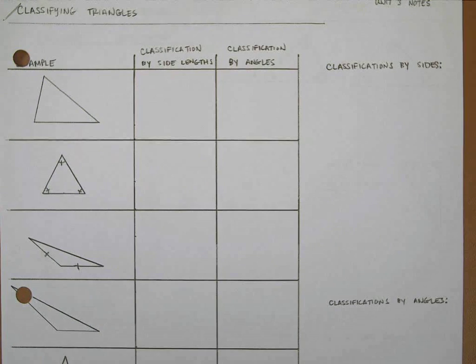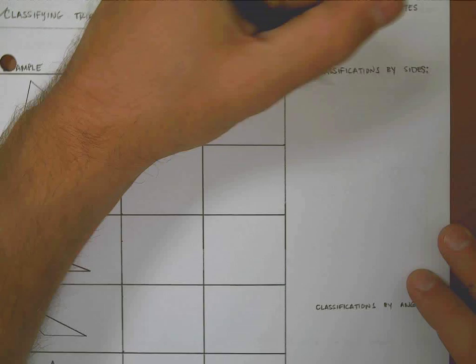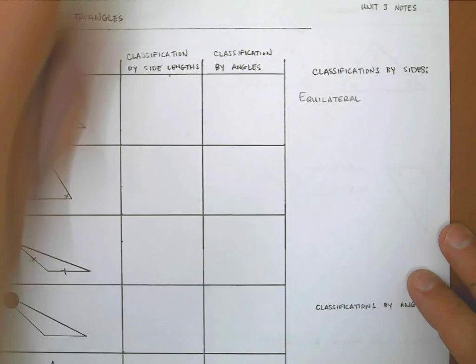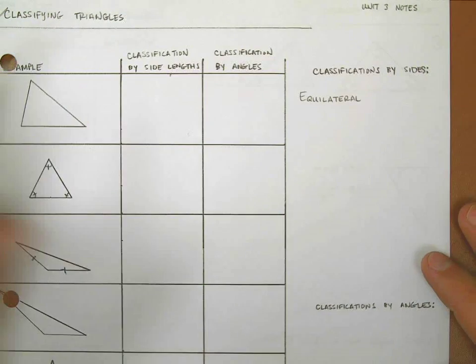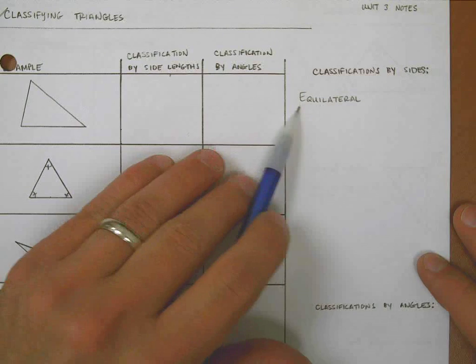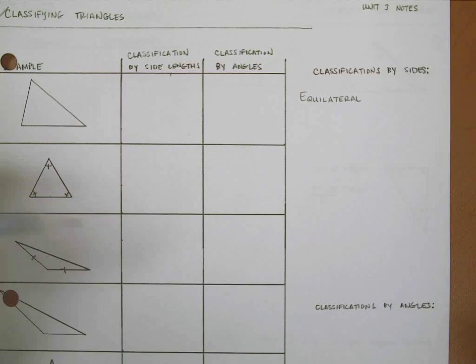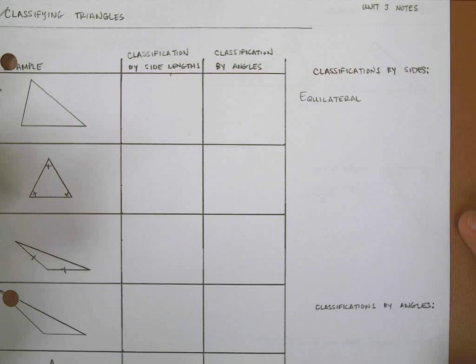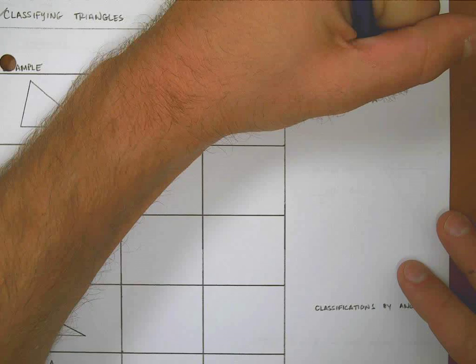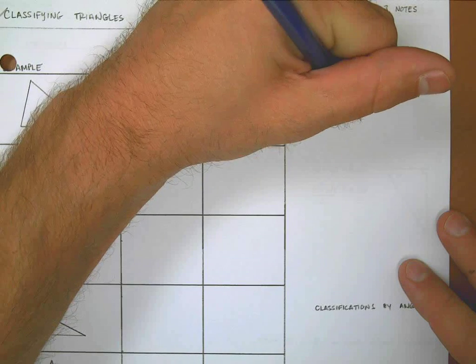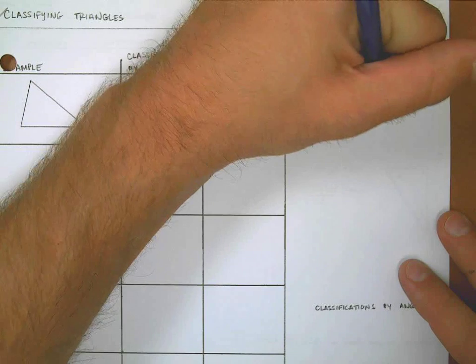The first one is called the equilateral triangle. You might notice the prefix 'equal' — that makes us think 'same.' What this means is that equilateral triangles have all three sides the same length.